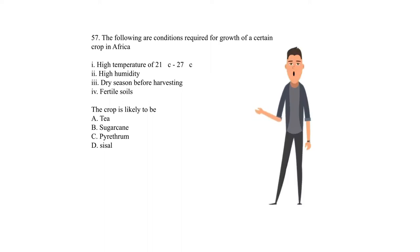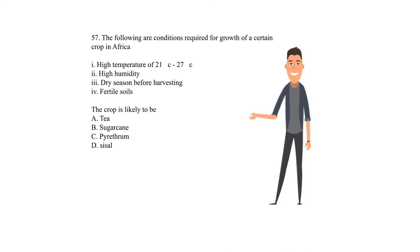Question 57. The following are conditions required for growth of a certain crop in Africa: 1. High temperature of 21 degrees Celsius to 27 degrees Celsius. 2. High humidity. 3. Dry season before harvesting. 4. Fertile soils. The crop is likely to be: